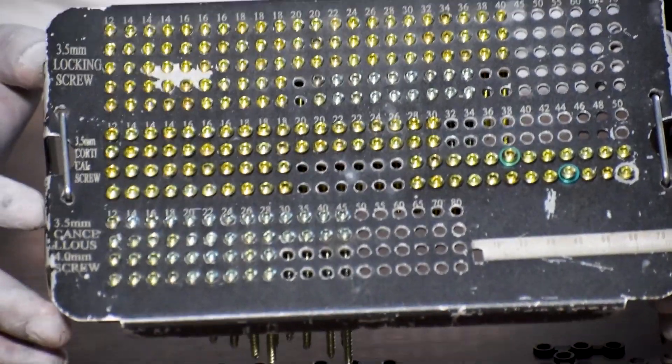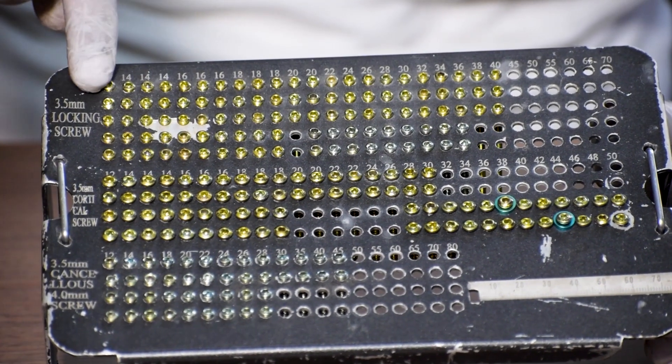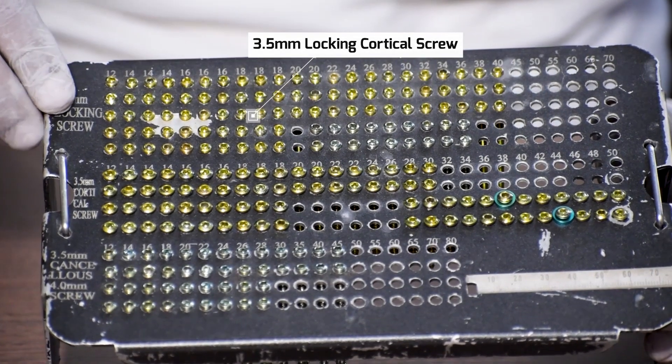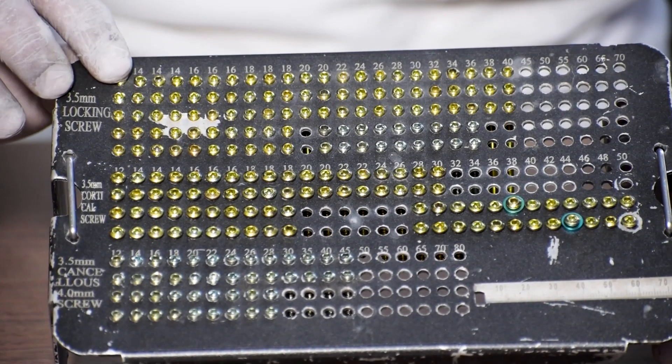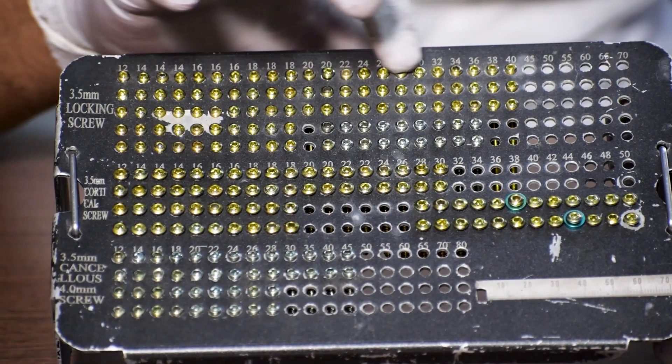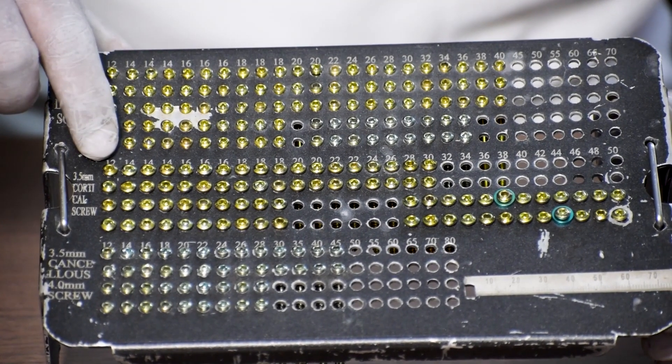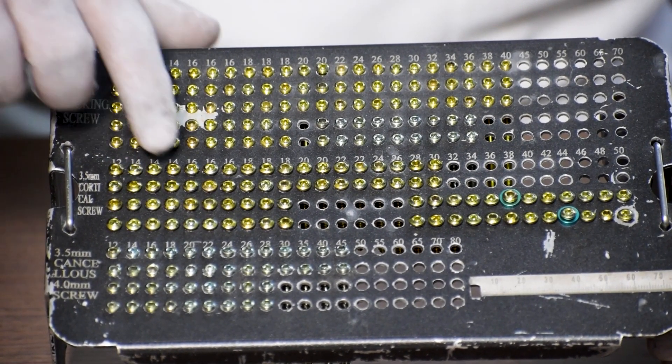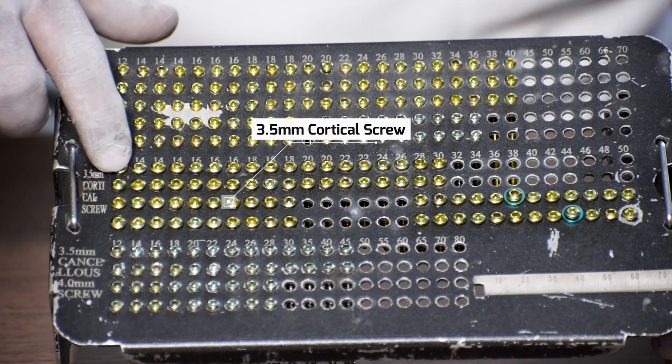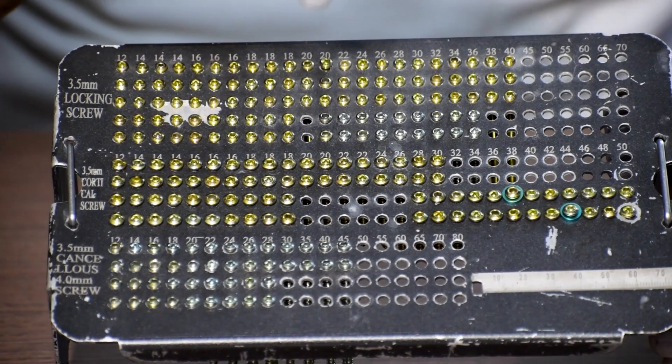As you can see in this screw tray, these are 3.5 locking cortical screws which is provided from 12 mm to 60 mm with 2 mm difference in the diameter. These are 3.5 mm cortical screws provided in the same size, 12 mm to 60 mm with 2 mm difference in the diameter.